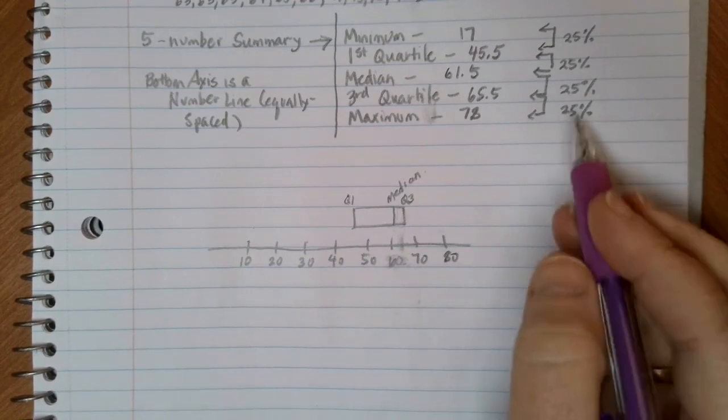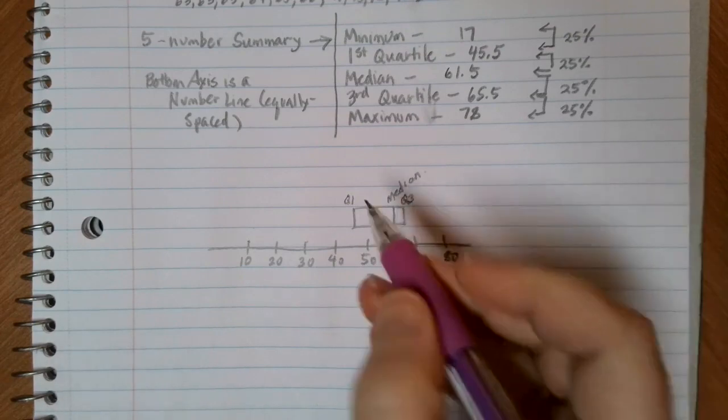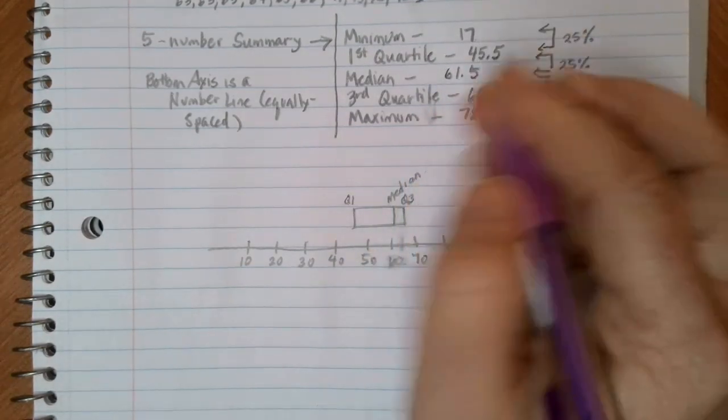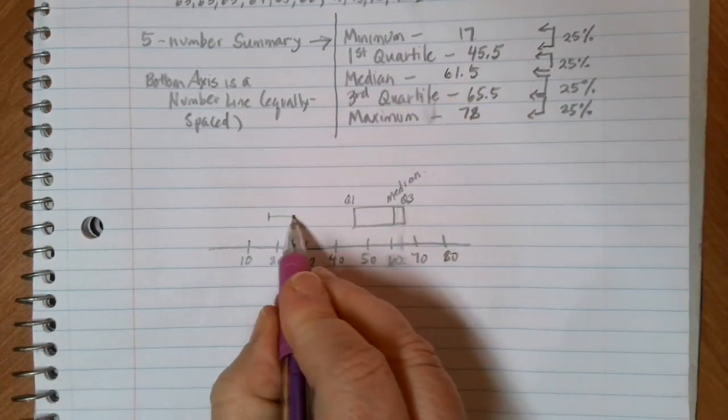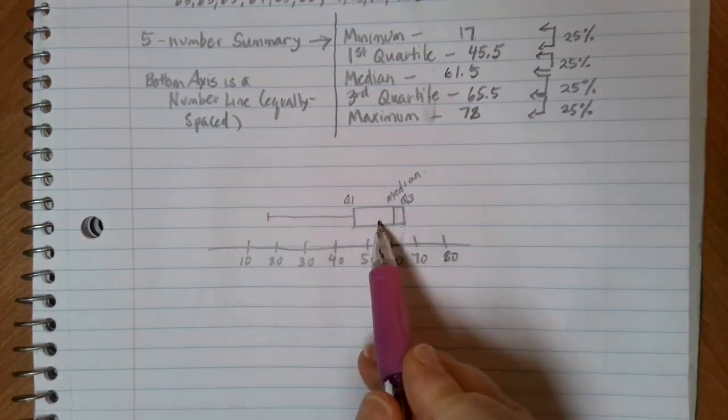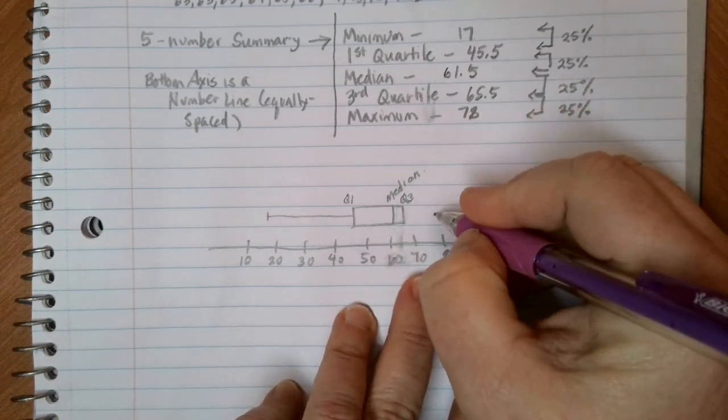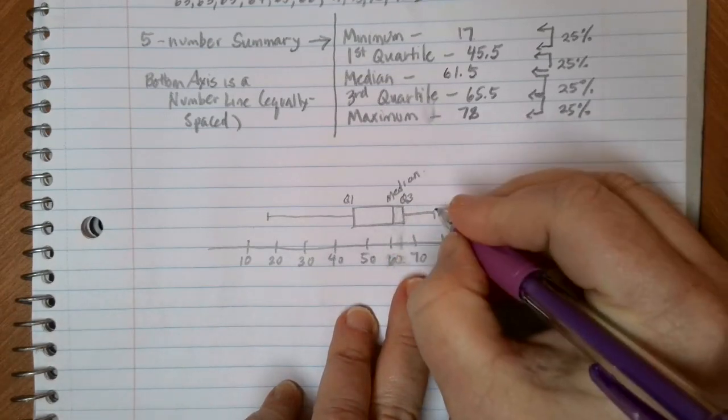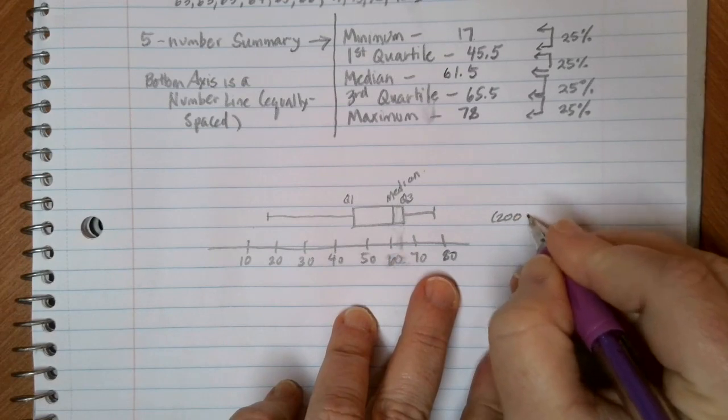The whiskers of our box and whisker plot are drawn out from the box in each direction. So what we are going to do is we're going to draw a whisker to the left that's going to go down to our minimum value, which is at 17. So that's our whisker, just a line going from the minimum value up to the box. And then the maximum value is going to be the upper side of that box here. So this is our Nobel Prize winners from 2000 to 2019.